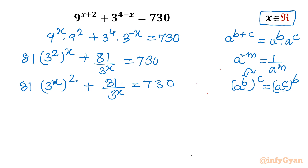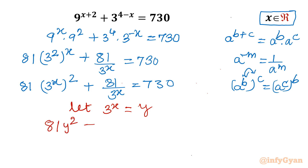Now it is substitution time. I will consider 3 power x equal to y. So let 3 power x equal to y. This equation will become 81y² plus 81 over y, equal to 730.